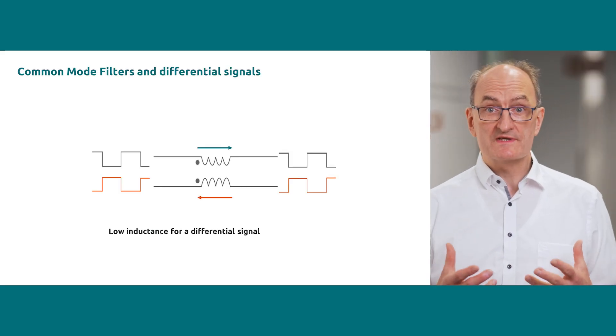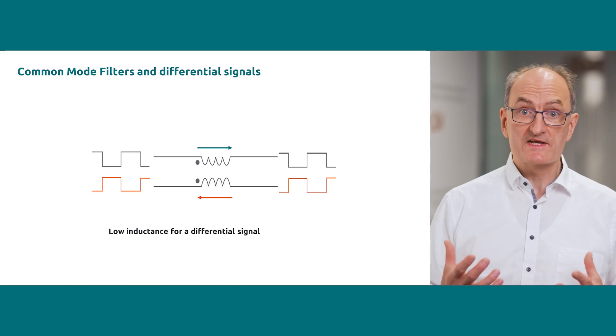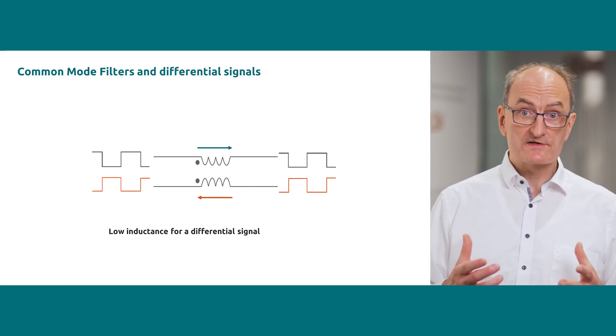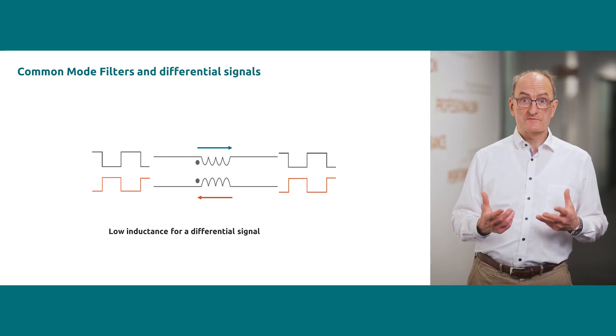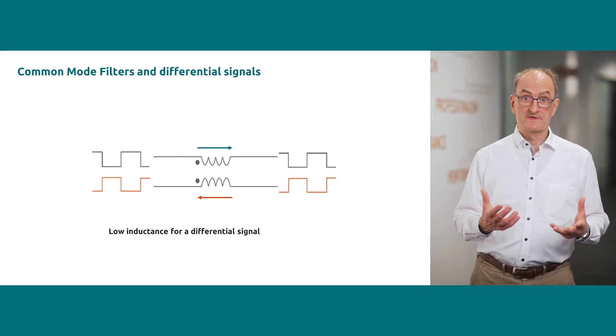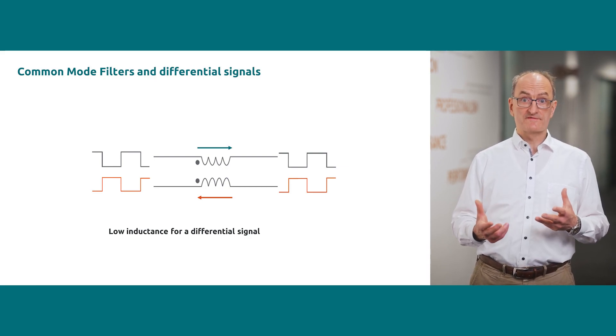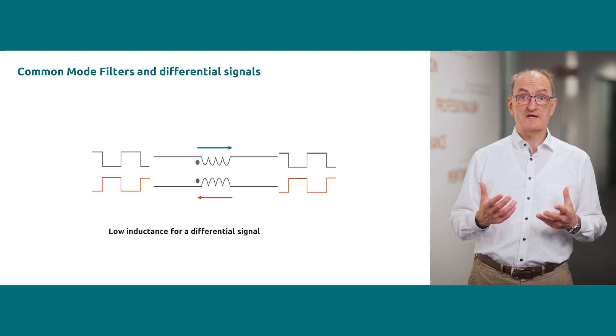A common mode filter uses two coupled coils and a differential signal line pair. For a differential signal in the target frequency range, the magnetic fields of these coils will cancel each other out. In consequence, the inductance of this coil pair will be low for a differential signal up to the differential cut-off frequency.